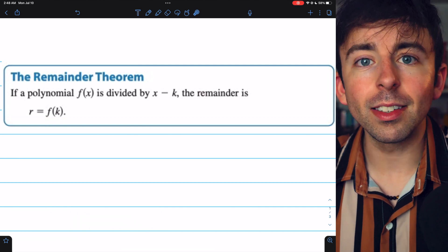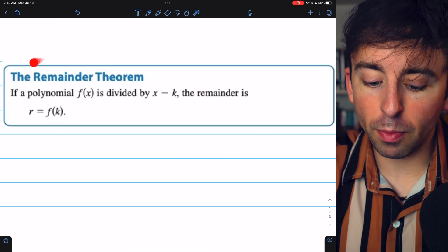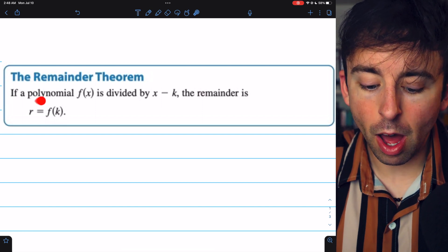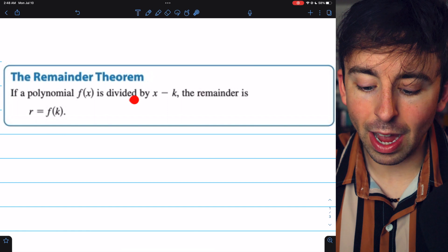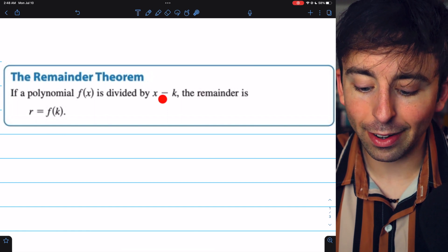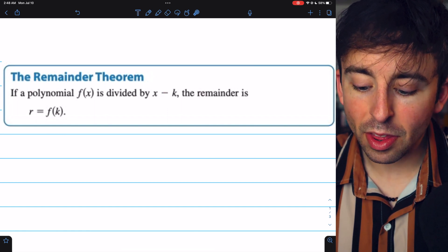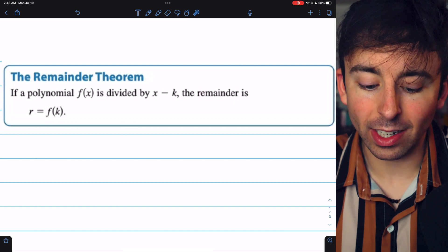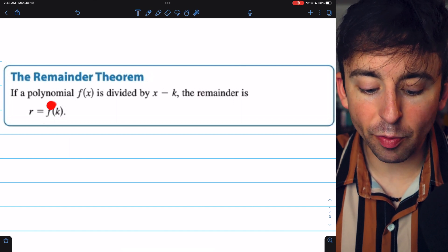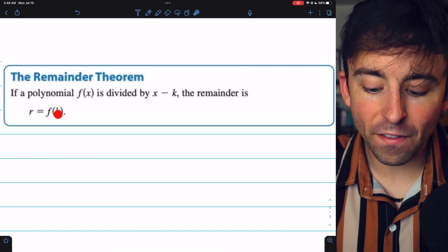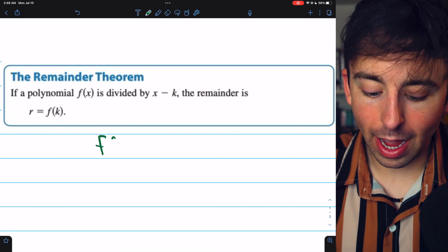One of the great uses of synthetic division comes from the remainder theorem, which tells us that if a polynomial f(x) is divided by a linear factor x minus k, then the remainder that we get from that division is actually the function's value evaluated at k.